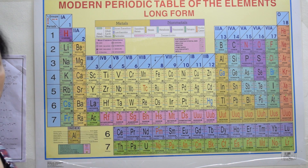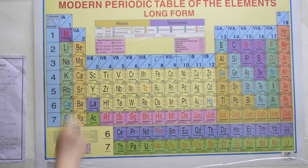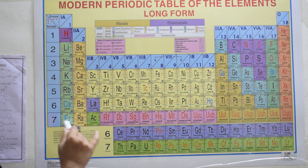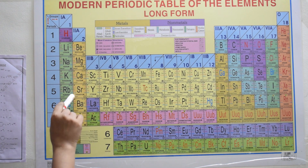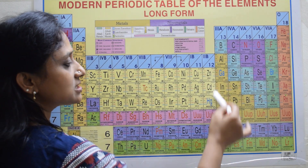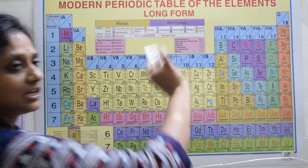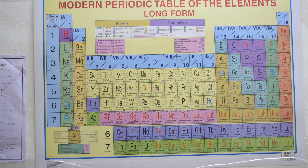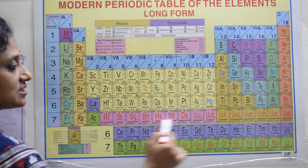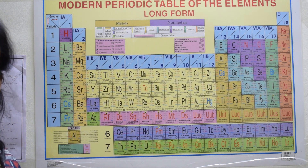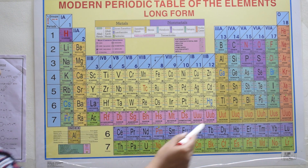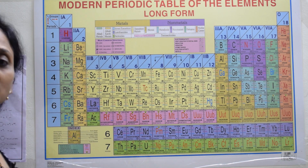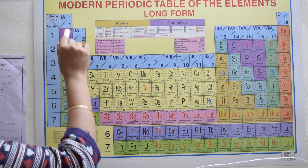Moseley placed elements according to their atomic numbers and periodicity in properties. The modern periodic table is divided into blocks. The first set on the left are called s-block elements, because the incoming electron enters the s orbital. On the right extreme are p-block elements, where the valence electron enters the p orbital. In the middle are transition elements, also called d-block elements, where the electron enters the d orbital.